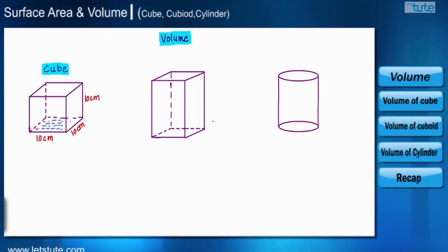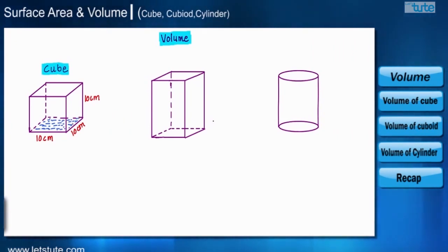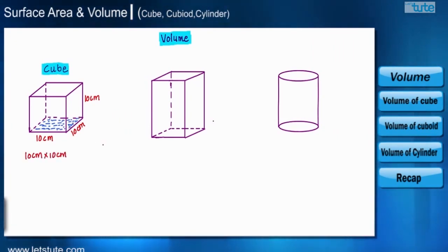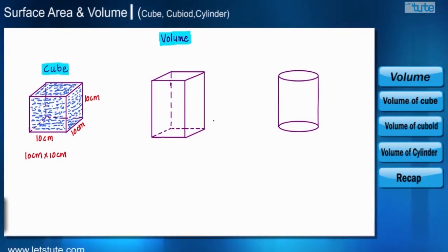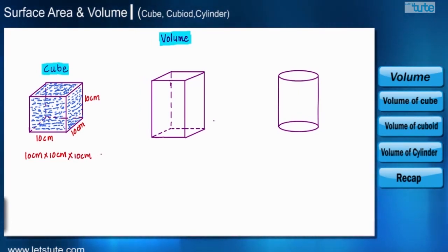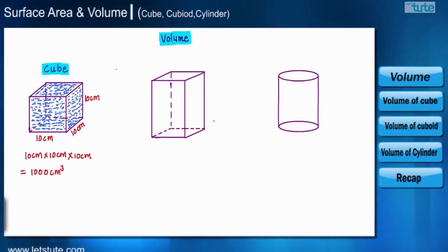If we pour water into the first container, it will spread on the bottom surface. The bottom surface is square, so it will occupy the area of a square: 10 cm × 10 cm. If we fill this container with water to a height of 10 centimeter, the total water poured is the area of the base into the height, giving us 1000 centimeter cubed.